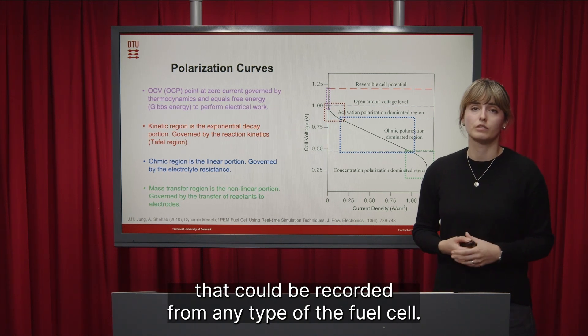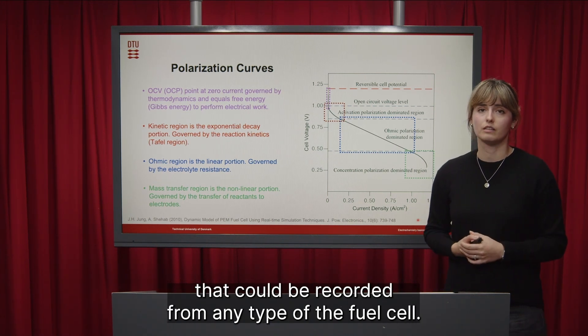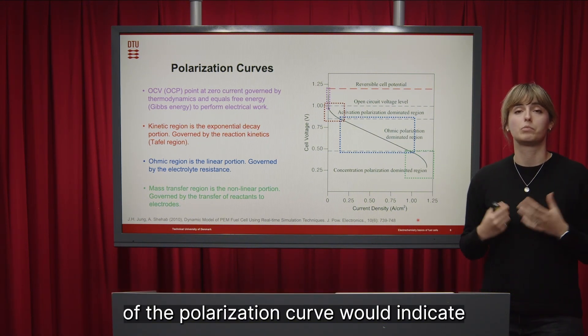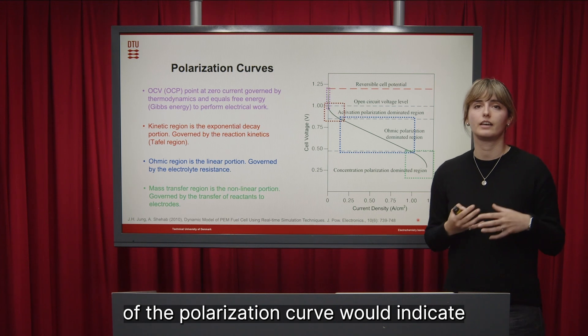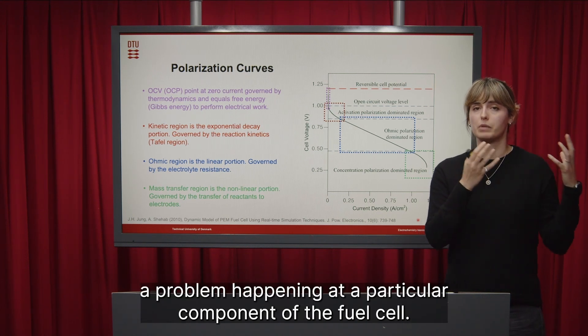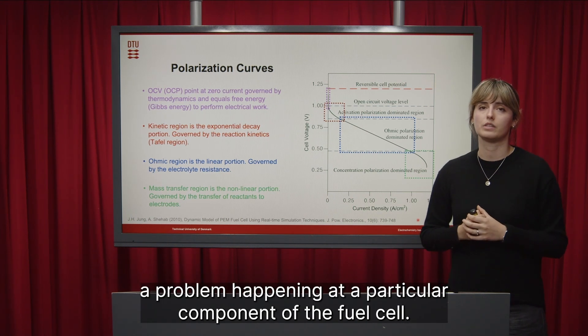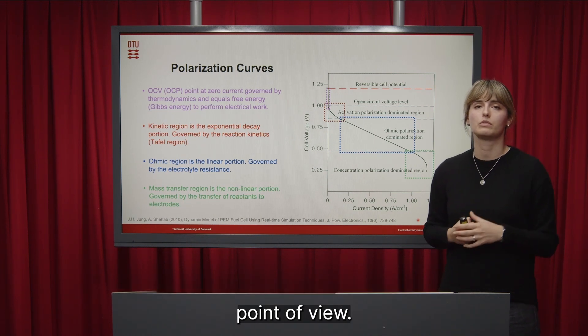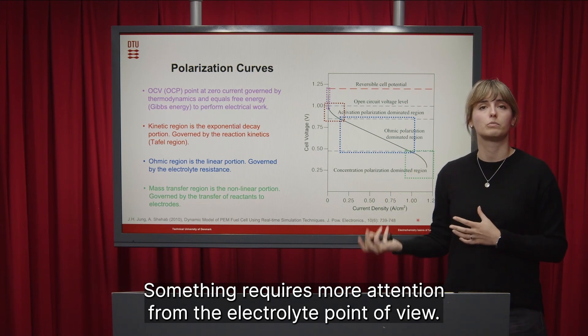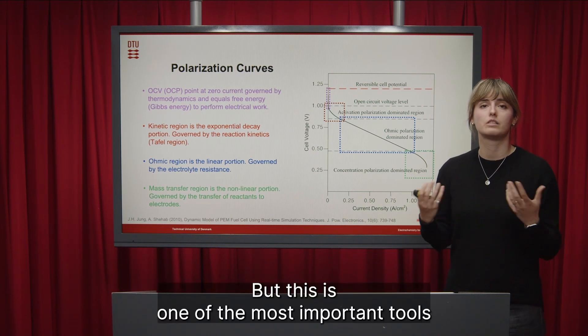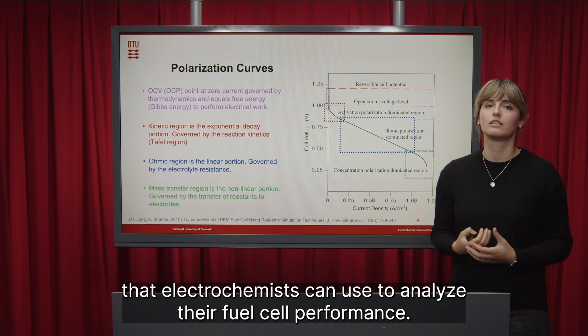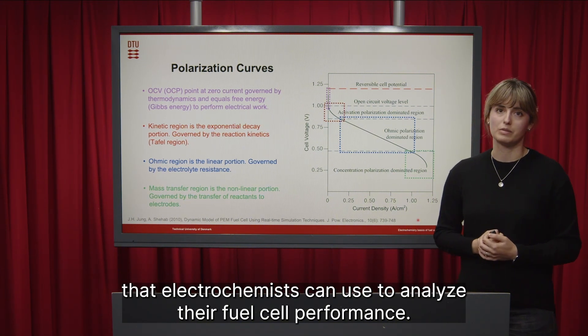So this was an overall description of a polarization curve that could be recorded from any type of the fuel cell and of course it's important to understand that each of this portion of the polarization curve would indicate a problem happening at a particular component of the fuel cell. So as I mentioned before something requires more attention from the catalyst point of view, something requires more attention from the electrolyte point of view, but this is one of the most important tools that electrochemists can use to analyze their fuel cell performance. Thank you.